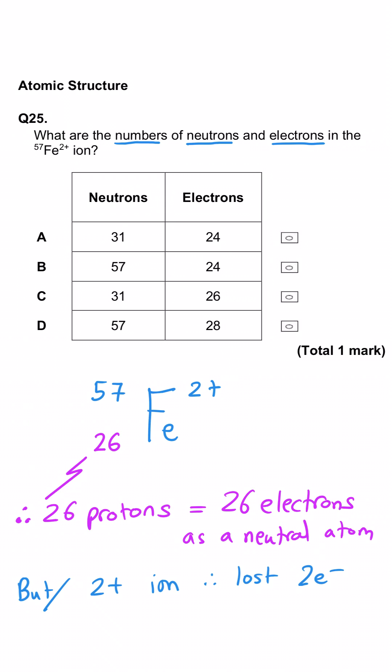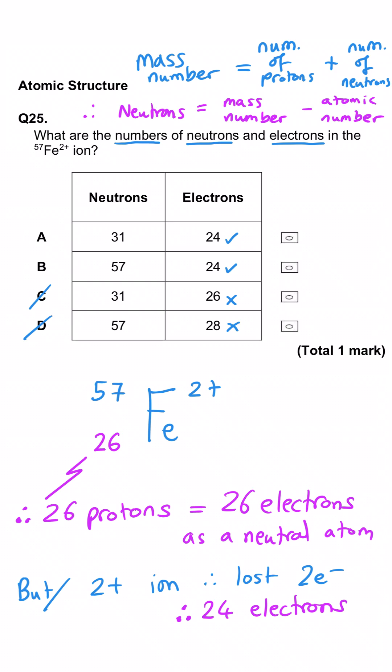This is a 2 plus ion which means it's lost two electrons and therefore it's got 24 which means C and D must be wrong. And then since mass number is the number of protons added to the number of neutrons, the number of neutrons is the mass number take away the atomic number. So 57 minus 26 which gives us 31 neutrons which means that A must be the correct answer.